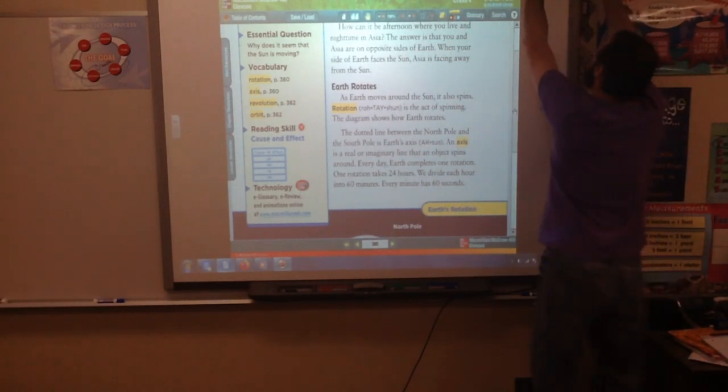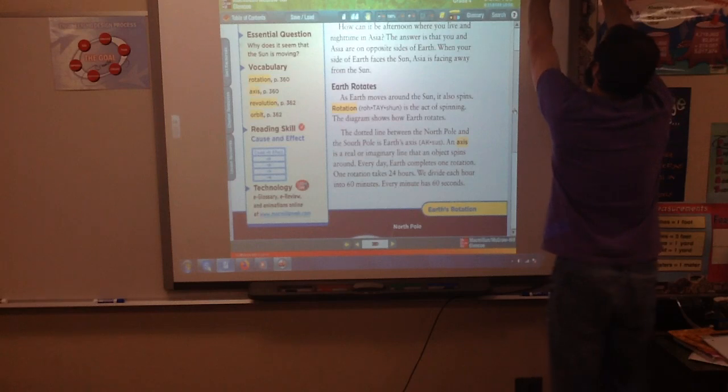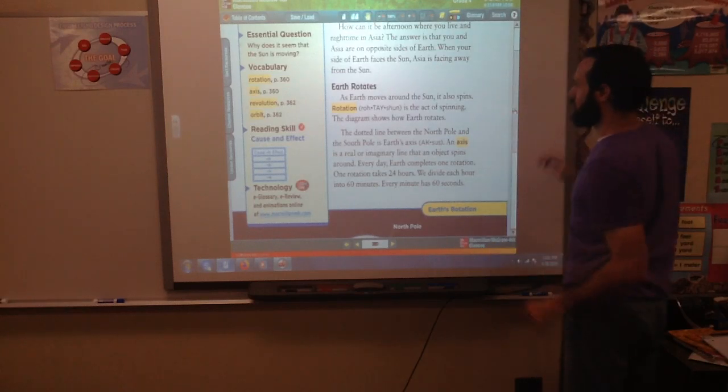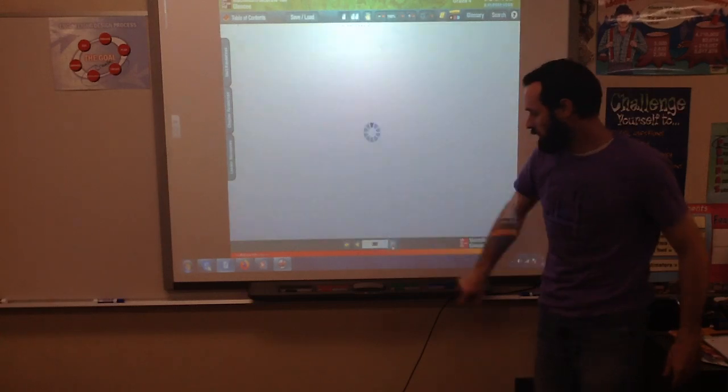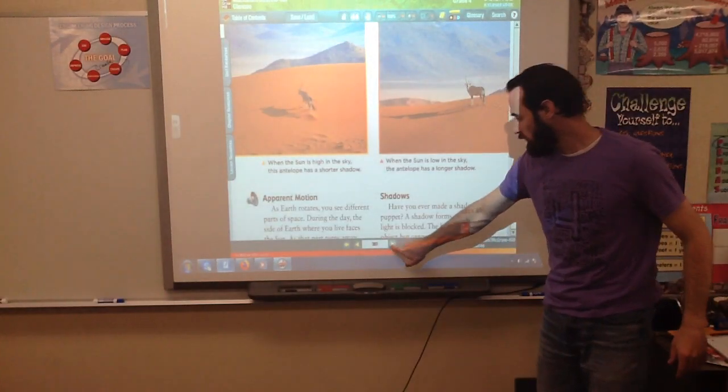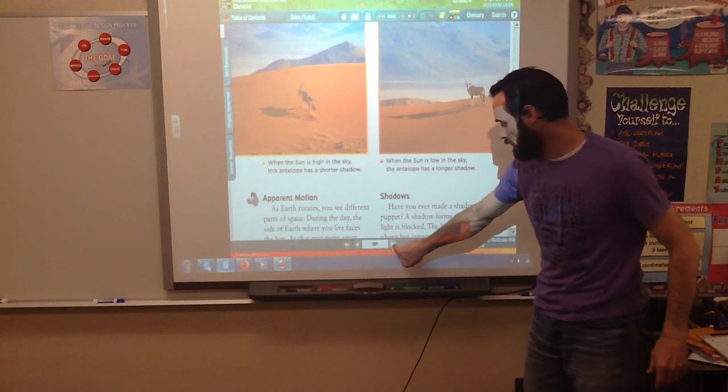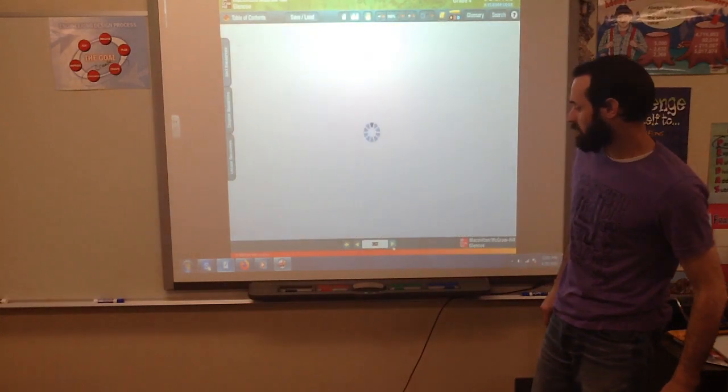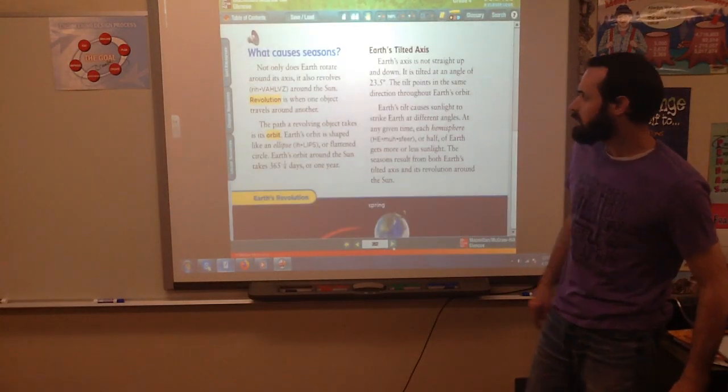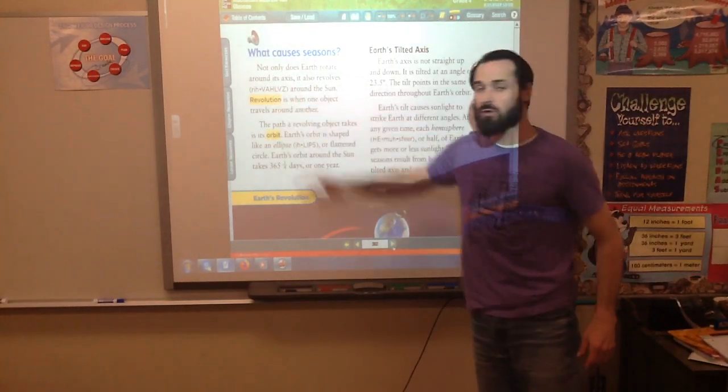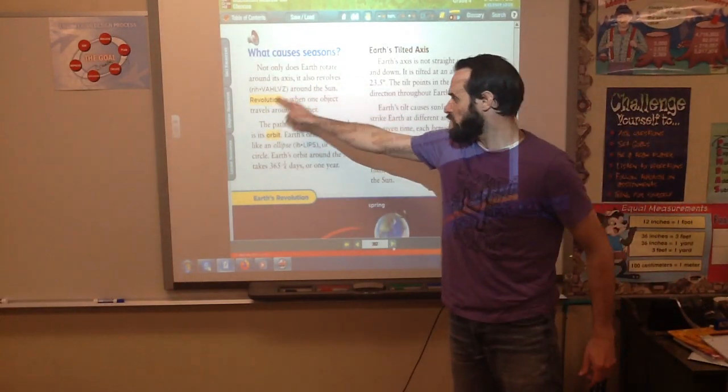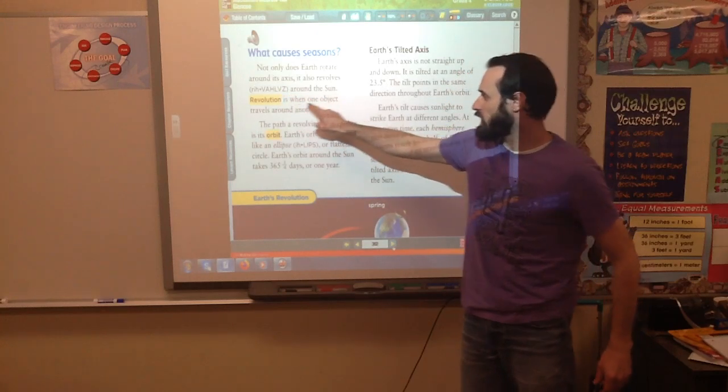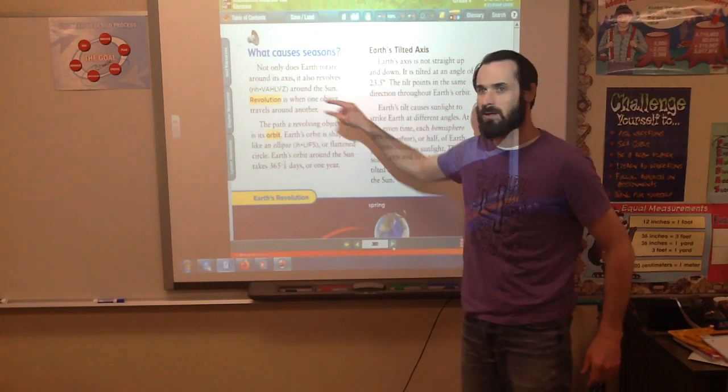Now, what is the difference between rotation and revolution? Rotation is spinning. We've got to go a couple pages ahead here. They'll probably jump two on me for some reason. Okay, here we go. Revolution is the other word. Rotation is spinning. Revolution is when one object travels around another.